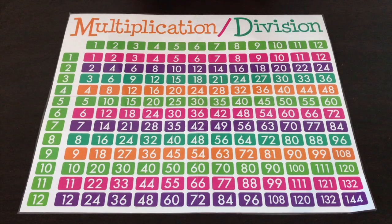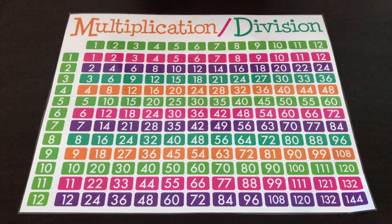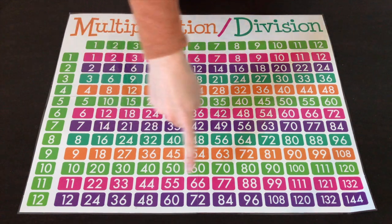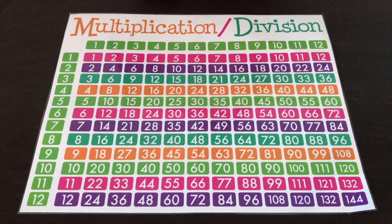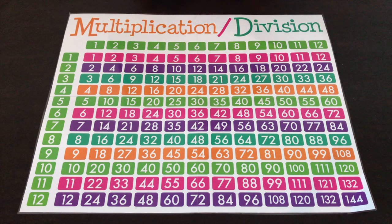To solve for division, it works a little differently than multiplication. For division, the number we start with is always our bigger number in the problem — those big numbers are actually the answers to the multiplication problems, so they become the beginning of a division problem. We actually don't start at that big number when using a multiplication chart for division.